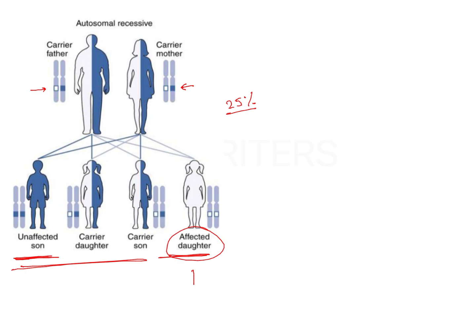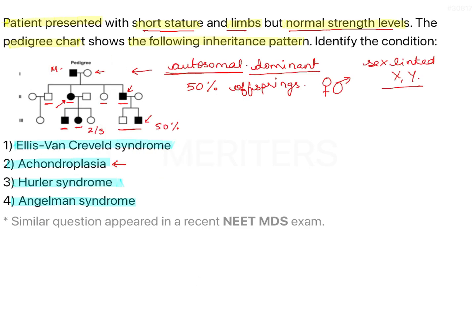Now looking at the options: Ellis van Creveld syndrome is a genetic disorder with short-limb dwarfism, additional fingers and toes (polydactyly), normal development of fingernails, and congenital heart defects. This rare skeletal condition is caused by an autosomal recessive trait, and the ectoderm, mesoderm, and endoderm are all three affected.